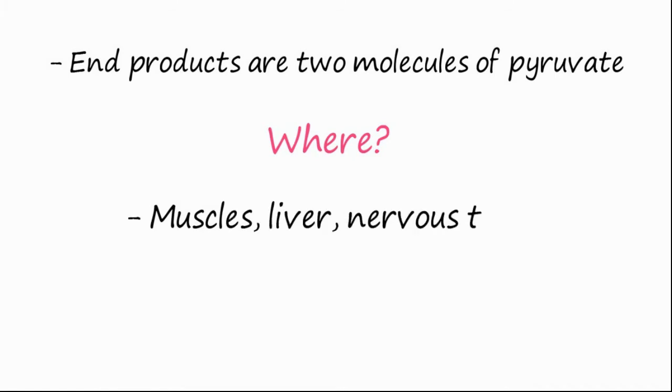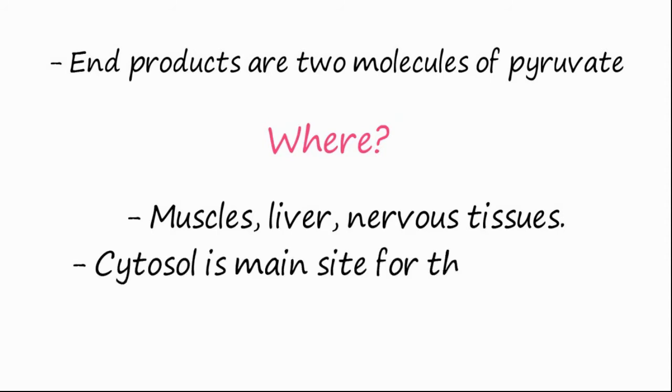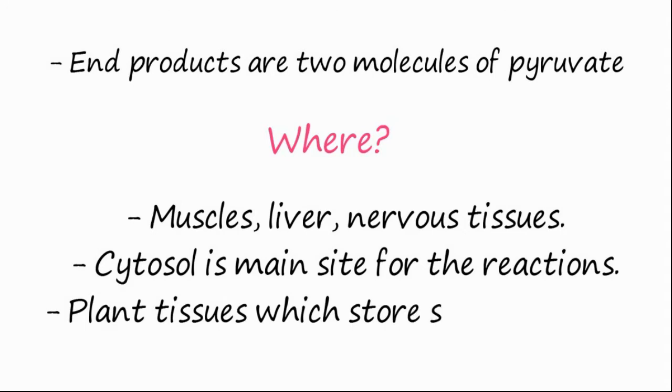This process occurs in muscles, liver, and nervous tissues. At the cellular level, cytosol is the main site for the reactions. In plant tissues which store starch, such as tubers, this process also occurs.